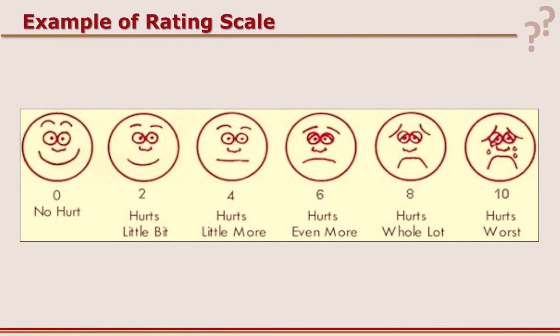A visual rating scale uses faces starting from 'no hurt' to 'hurts worst.' The emotions are shown visually and the rater puts a tick mark accordingly.